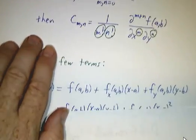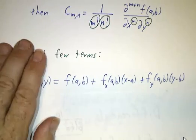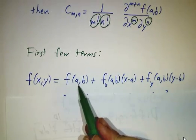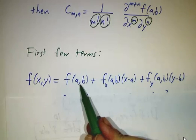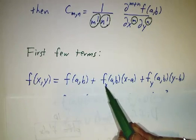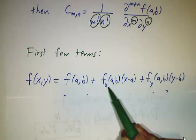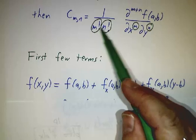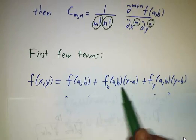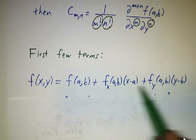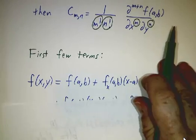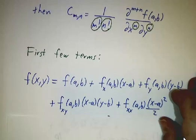And if you want to write out the first few terms, you say f of x,y. Well, that's the point that you started with. Plus c_10. C_10 is just the partial of f with respect to x divided by 1 factorial. That times x minus a plus partial with respect to y times y minus b. And then you get some more terms.